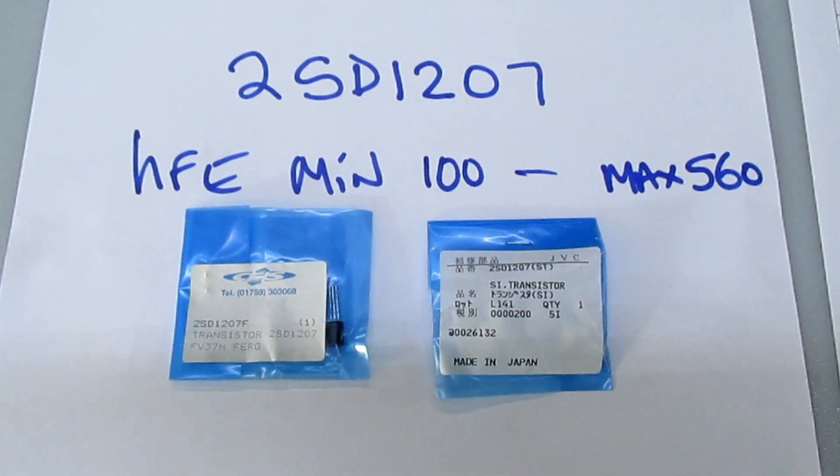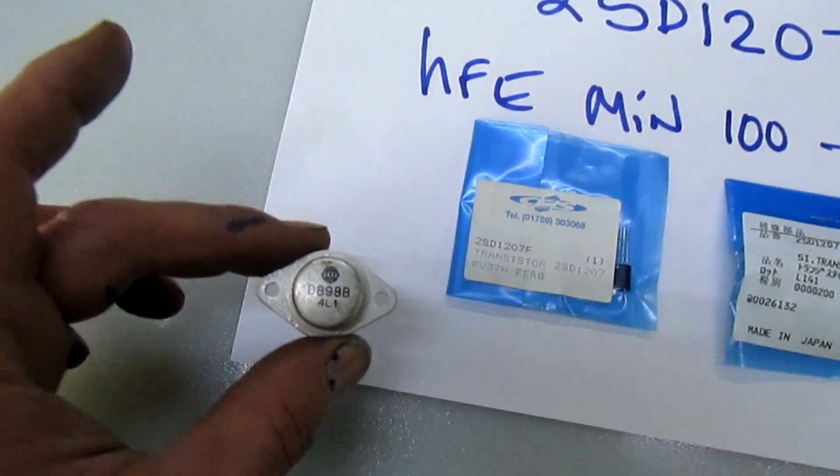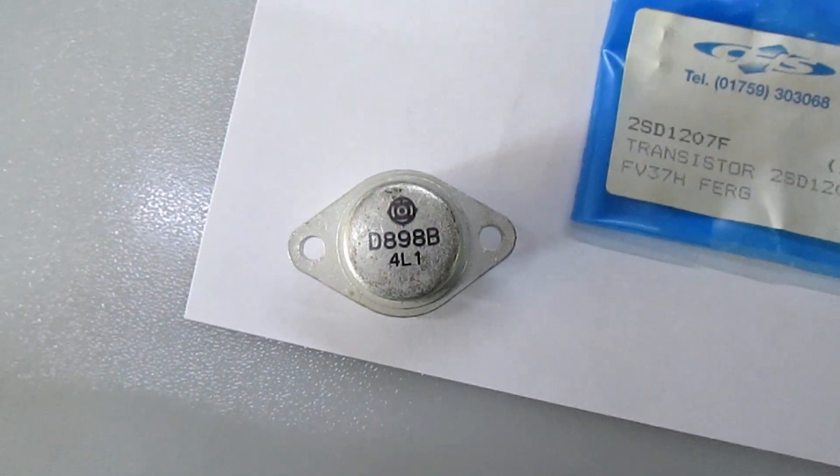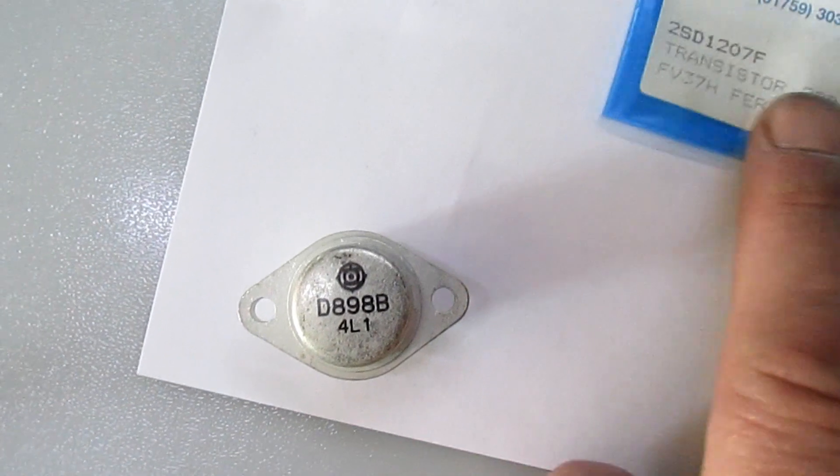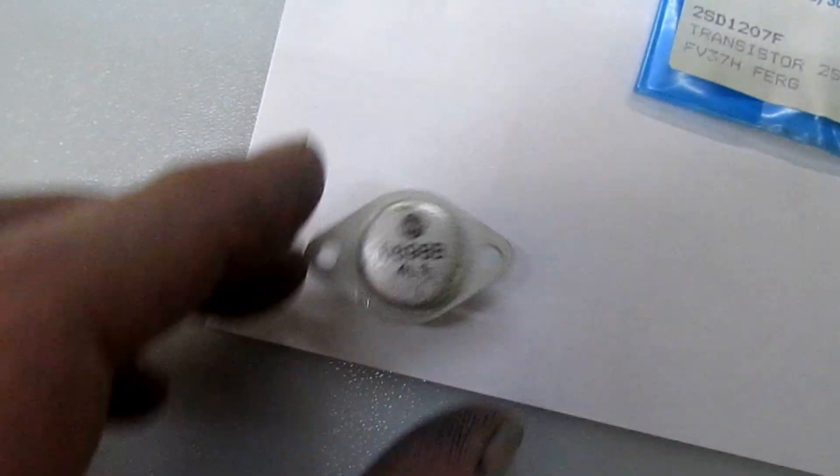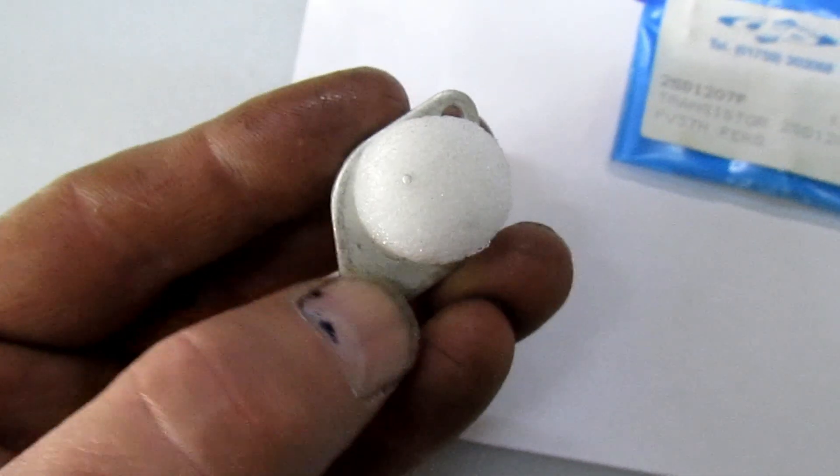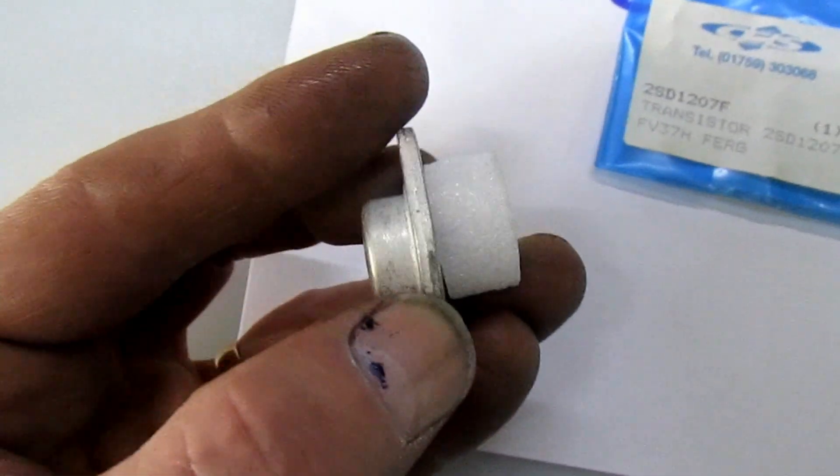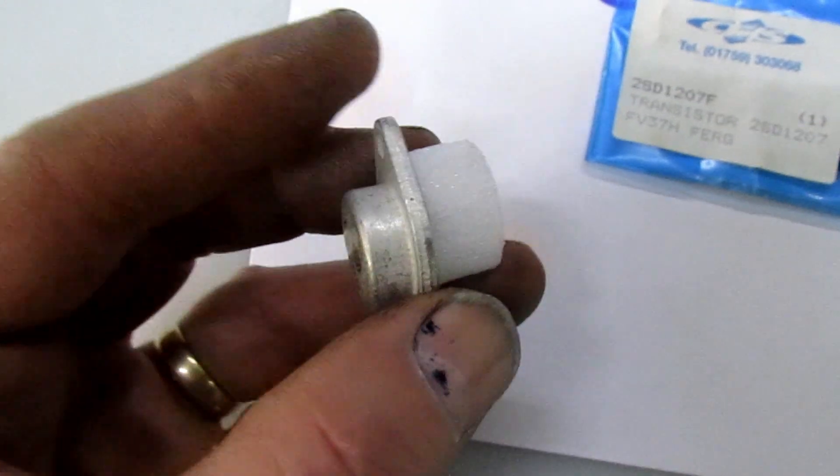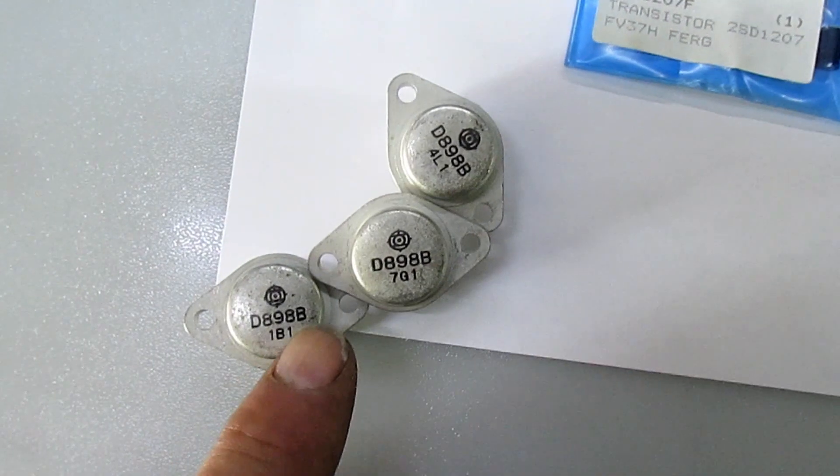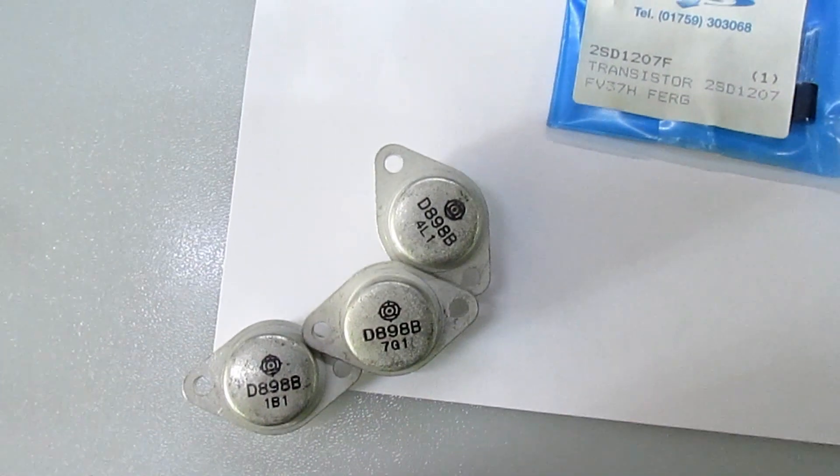If we move over to here, taking this for an example, it's a 2SD8980, a line output transistor for a TV from about 30 years ago in a TO-3 case. This bottom bit, if you scrape that plating off, is actually made of copper as a heat conductor, so it does have quite a good scrap value even if it doesn't work.